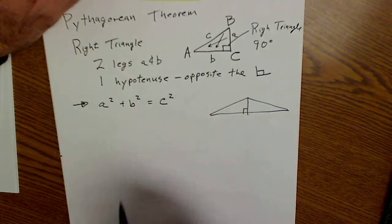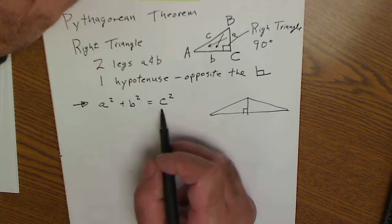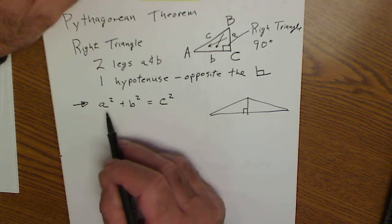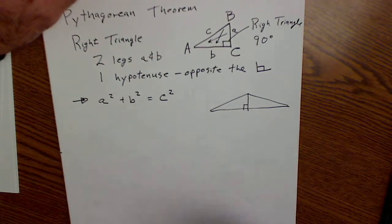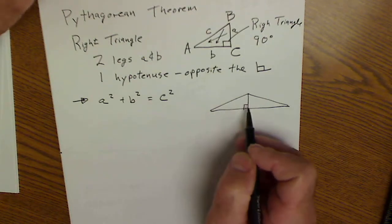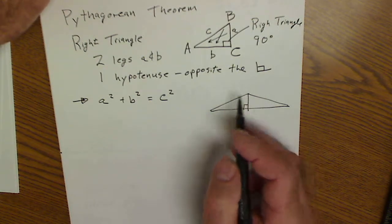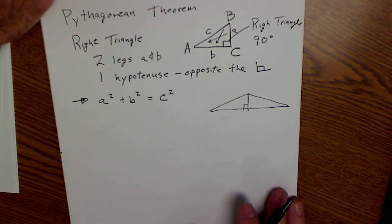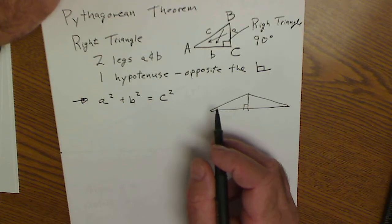With the Pythagorean theorem, you either have the length of the two legs and you can find the hypotenuse, or if you have the hypotenuse and one leg, you can find the other leg. And if you only have an angle and a leg, you could use right triangle trigonometry to find the other parts of that triangle — but we'll put that off for another video. Right now I'm just talking about the Pythagorean theorem.